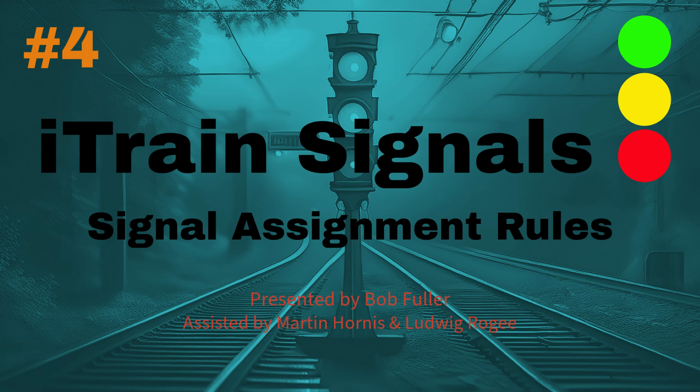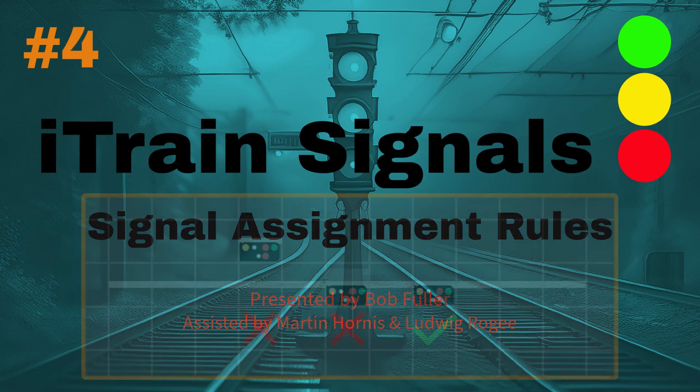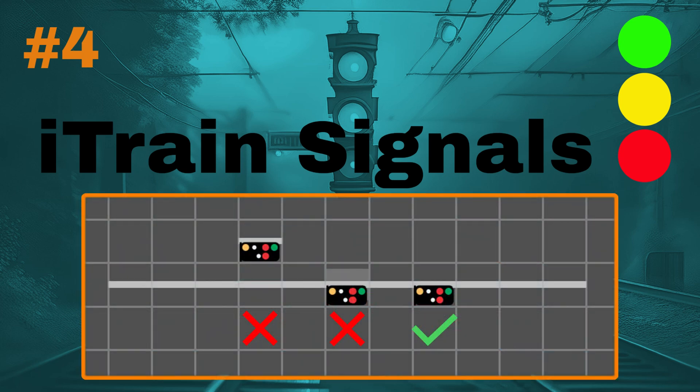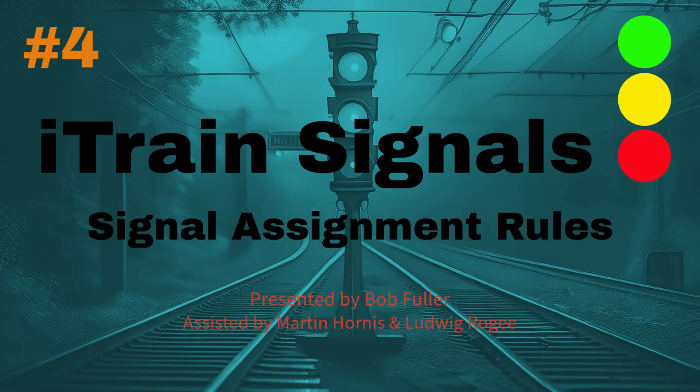But there are situations when the automatic assignment of the signal cannot be completed by i-train, such as when a signal is not drawn in the switchboard track, or when a block is divided between two tabs on the switchboard, or when things just don't go as expected. So we also need to know how to assign the signals manually. In this episode we describe how.